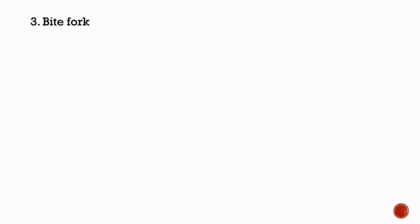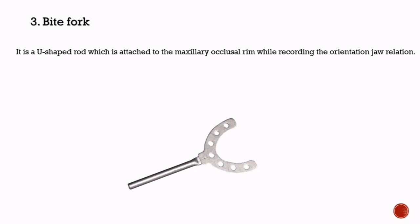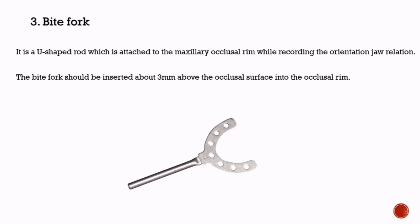Third is the bite fork. It is a U-shaped rod which is attached to the maxillary occlusal rim while recording the orientation jaw relation. The bite fork should be inserted about 3 mm above the occlusal surface into the occlusal rim.